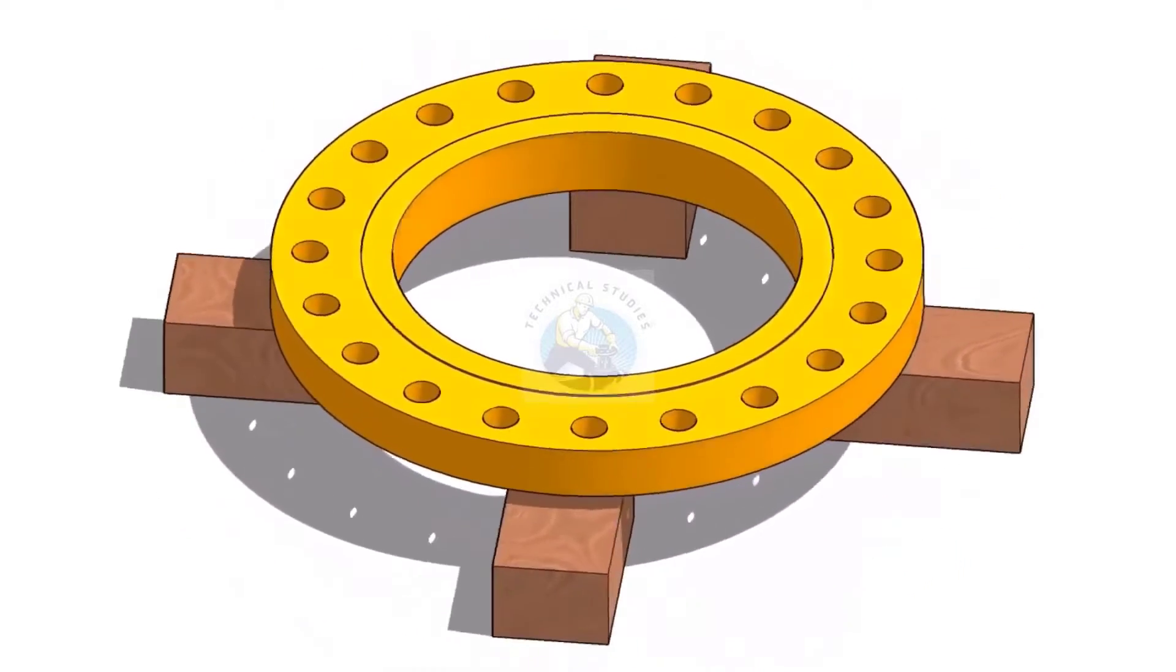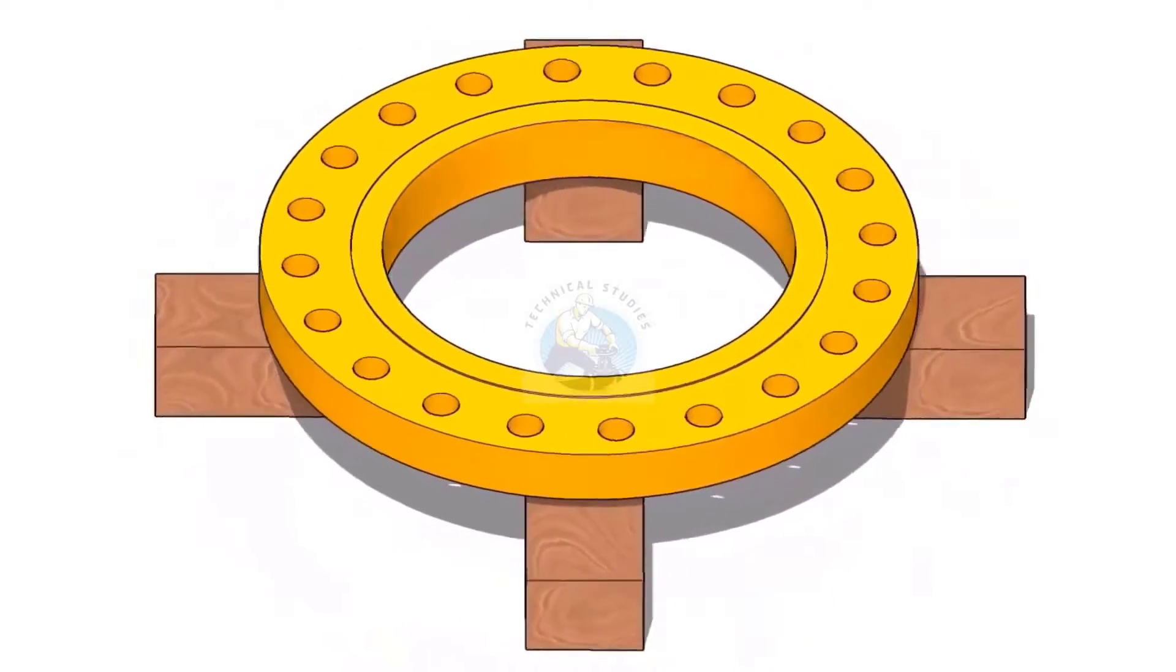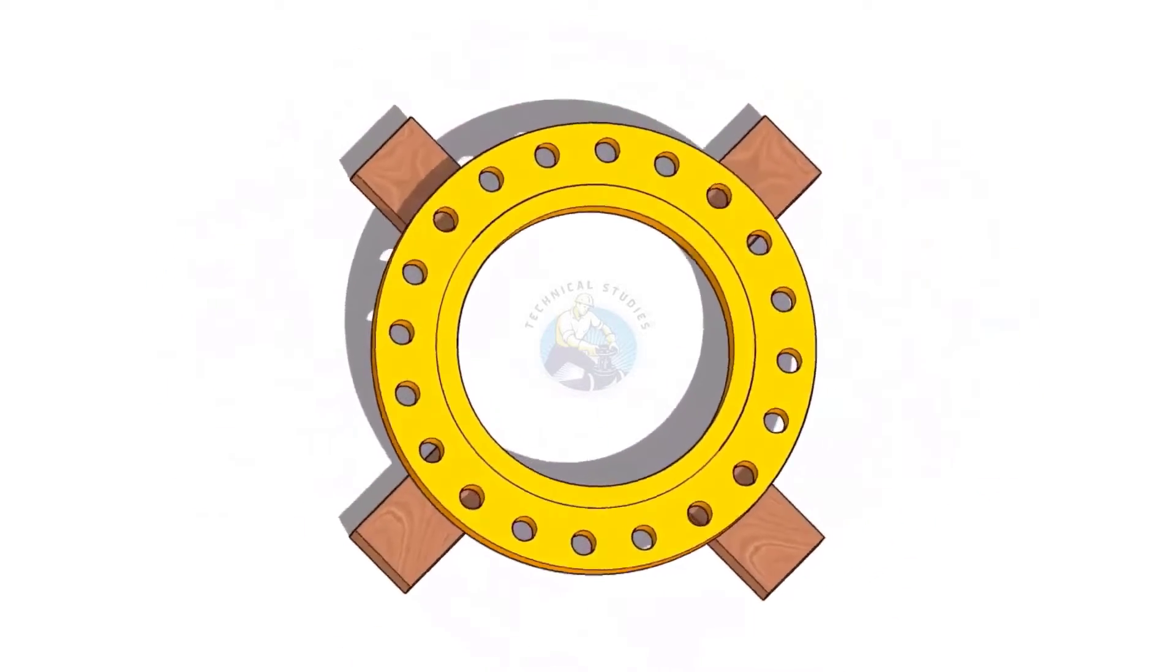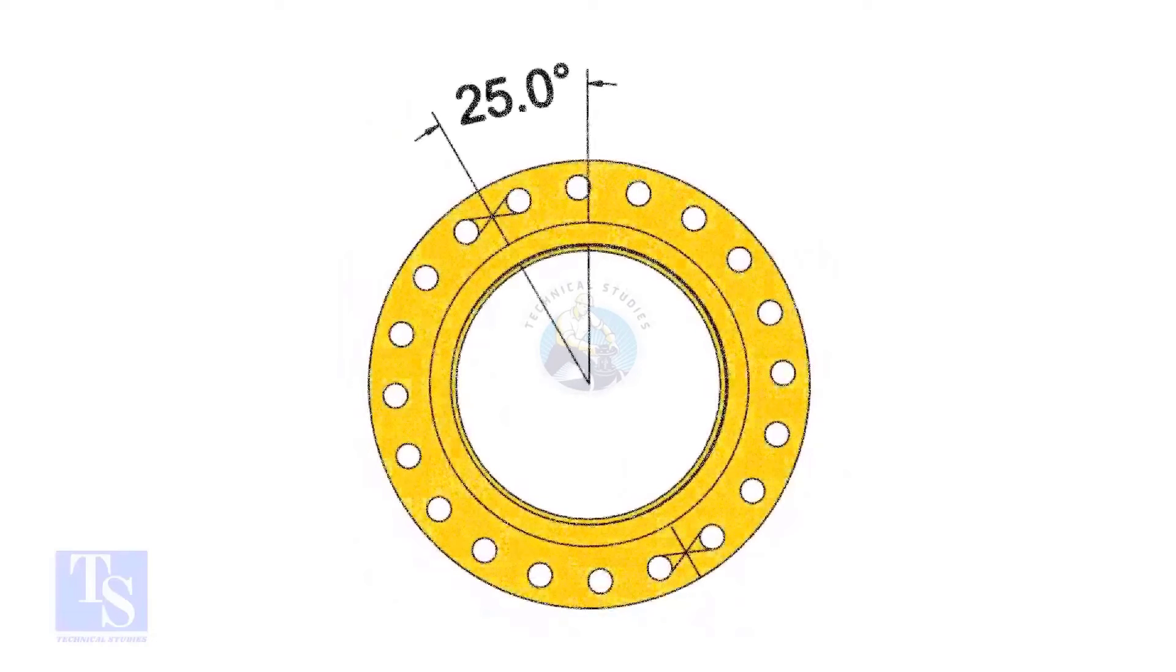I choose a slip on flange for the example, but the calculation and the procedure are the same for all flanges. The pipe and the flange size is 16 inch, and the flange will rotate 25 degrees anti-clockwise. Hope you all know the difference between clockwise and anti-clockwise rotation.